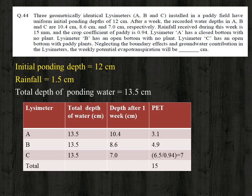For lysimeter C (open bottom, with paddy plants), the term crop evapotranspiration applies. The total water loss is 13.5 − 7 = 6.5 centimeter, which represents crop evapotranspiration (ETc).